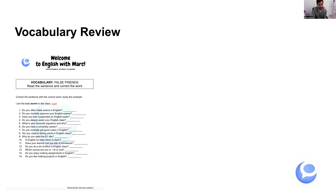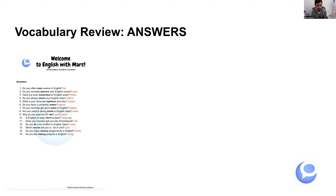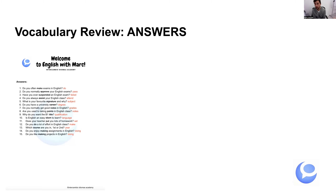OK, very good. Let's see — these are the correct answers. Do you often do exams in English? Do you normally pass your English exams? Have you ever failed an English exam? Do you always attend your English classes? 'Attend' means to go to class. And: What is your favourite subject and why? We say 'subject' for an academic subject — not 'signature.' 'Signature' means a handwritten signature.